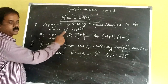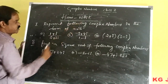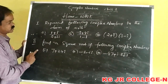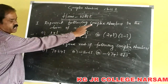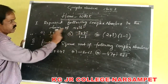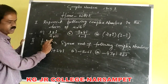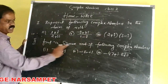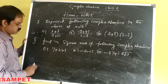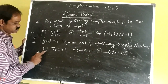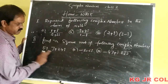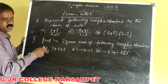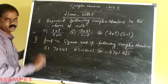Dear friends, today's homework is to solve these two sets of problems: represent a complex number in the form of A plus iB — three problems for the first set; and find the square root of complex numbers — three problems for the second set. Solve these problems.